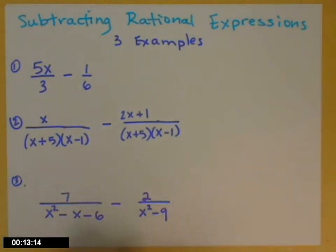So let's look at the first one. I have 5x over 3 minus 1 over 6. So I want to find the lowest common denominator. I'm looking at the 3 and the 6, trying to find the smallest thing that both go into nicely. That would be 6.